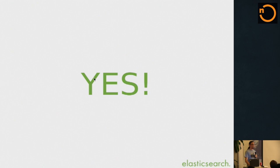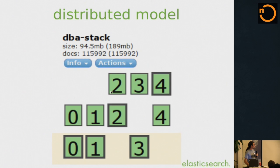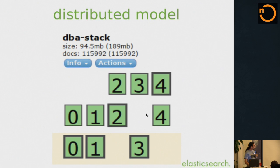Yes, it is web scale. We have customers with over hundreds of terabytes of data in a single cluster and it still works. One index is by default divided into five shards. In a situation with one index, five shards, and three nodes, the data is distributed. If you kill one node, it associates new replicas and heals itself.